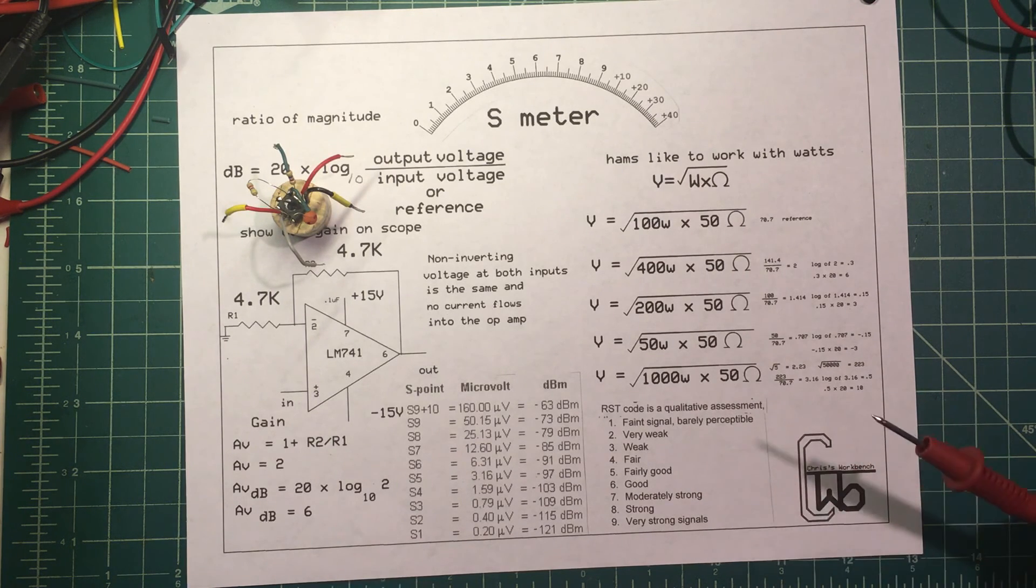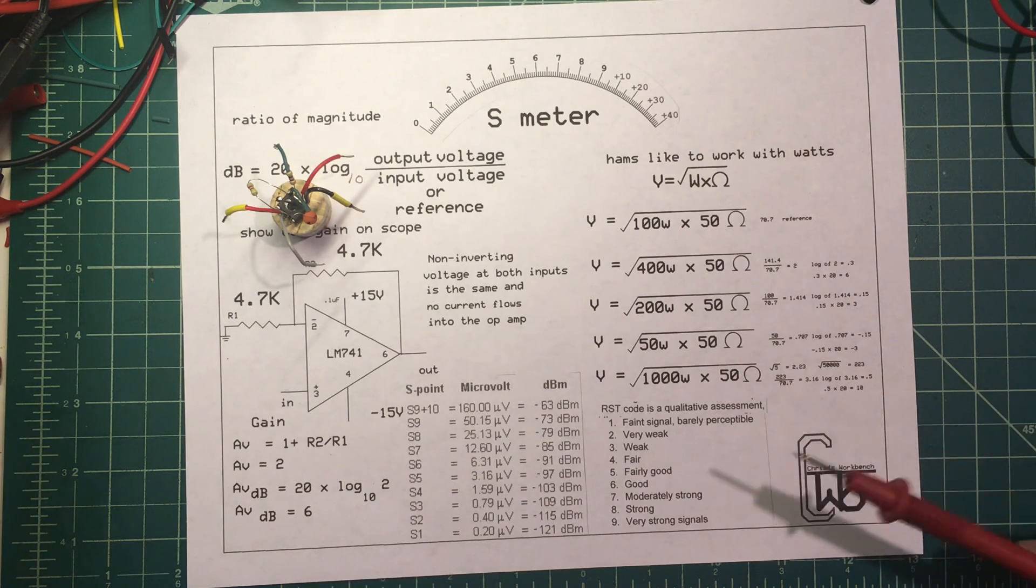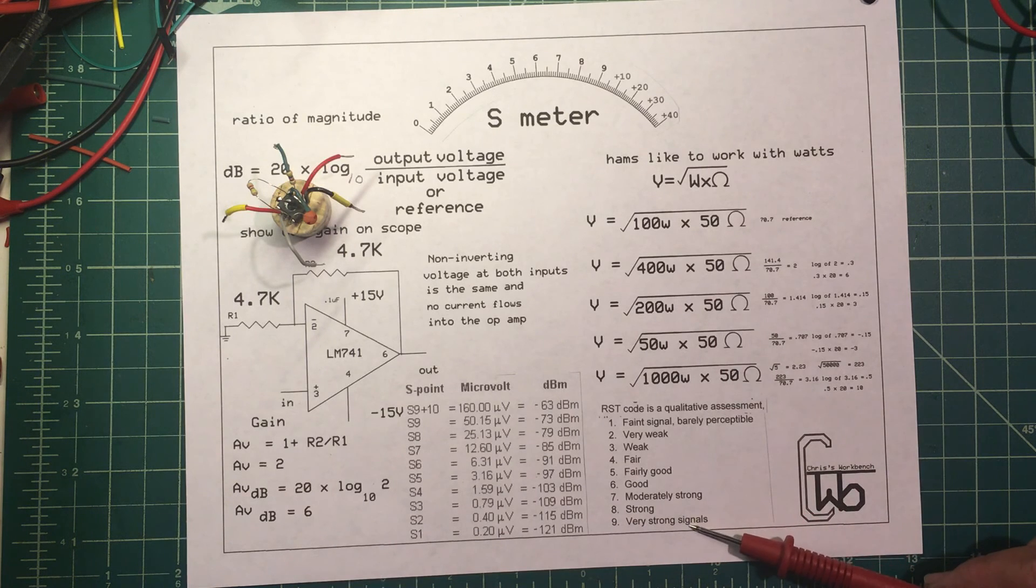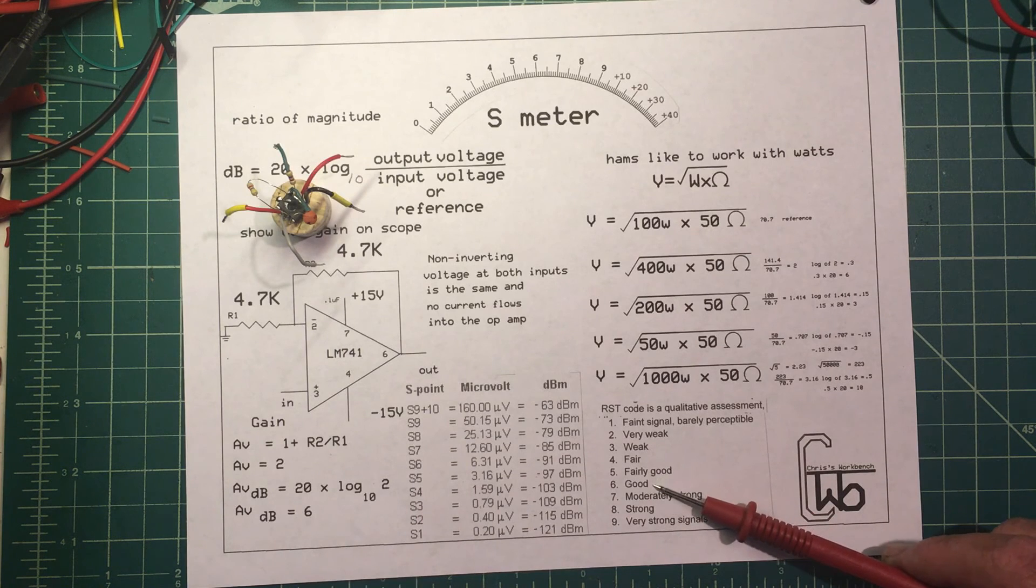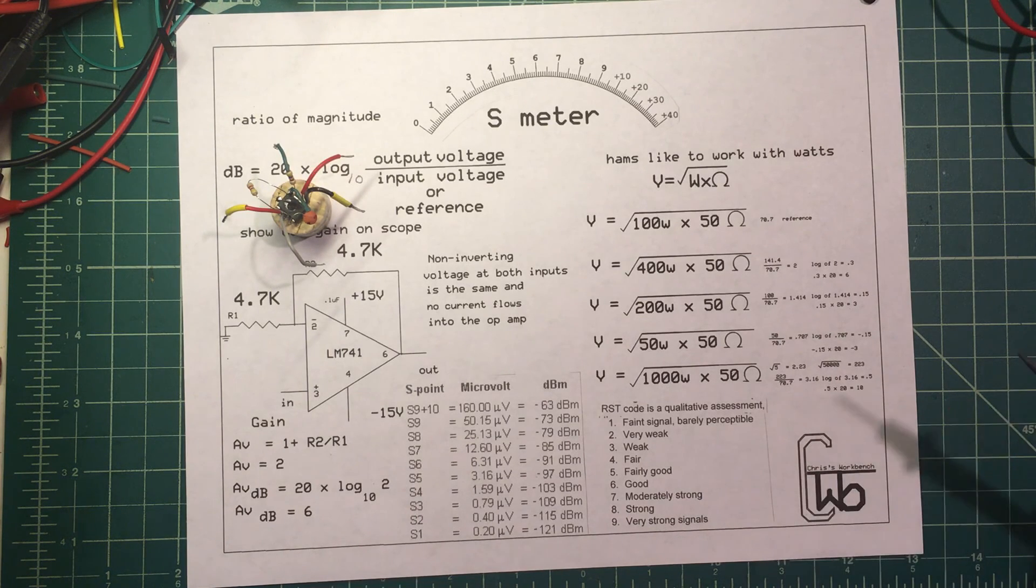You can just look at the S meter, but if you don't have one you can guess that a nine is very strong signal, eight is strong, seven is moderately strong, six is good, five is fairly good, and so on. So that's our RST code.